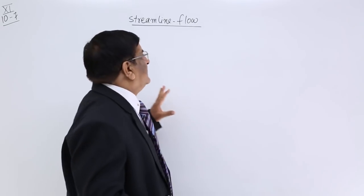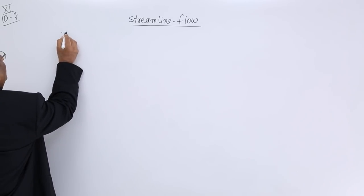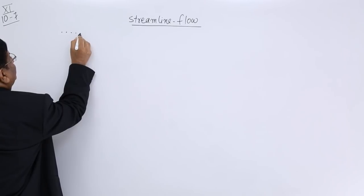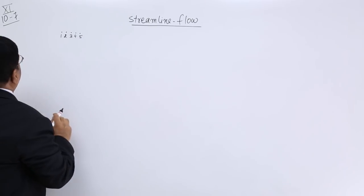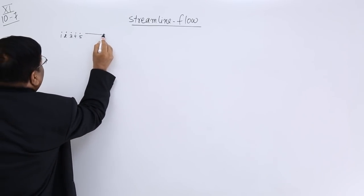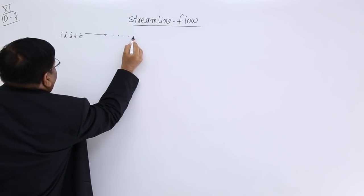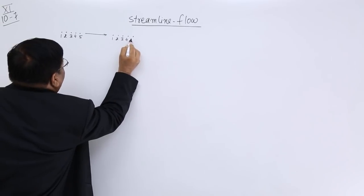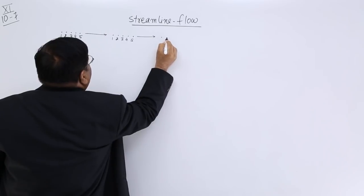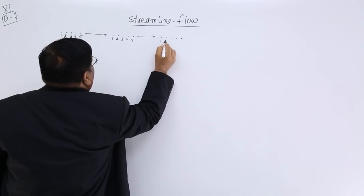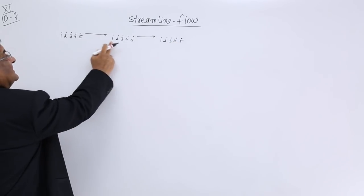In orderly flow, see it very minutely: there are five particles in a line — one, two, three, four, five. The fluid is flowing. After some time, we see them again as one, two, three, four, five. Again after some time, one, two, three, four, five. Their order is the same.